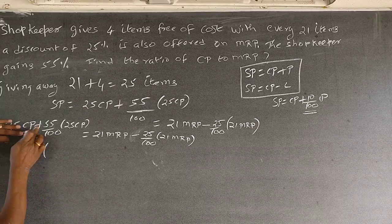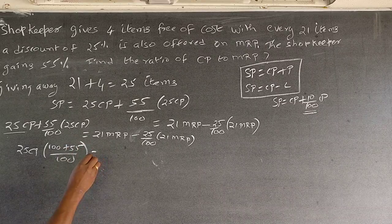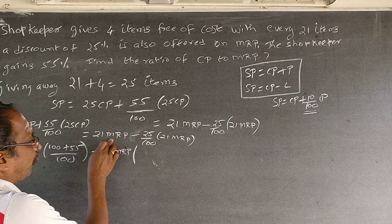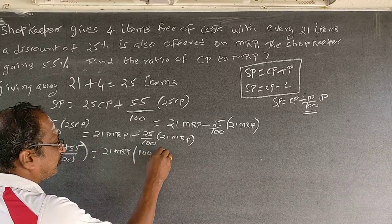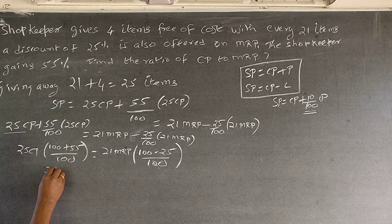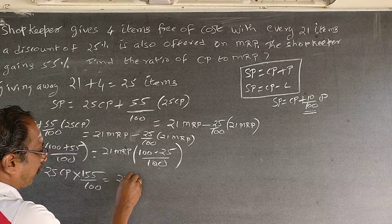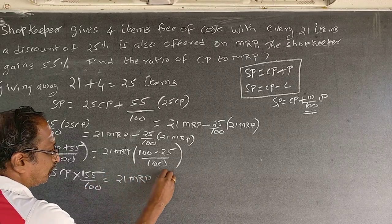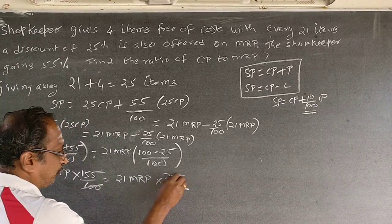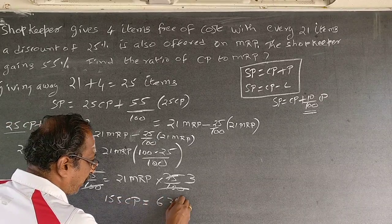Simplifying the left side: 25 CP is the common factor, giving 25 CP into 155 by 100. On the right side: 21 MRP is common, giving 21 MRP into 75 by 100. Cancelling 100 from both sides: 25 CP into 155 equals 21 MRP into 75, which simplifies to 155 CP equals 63 MRP.